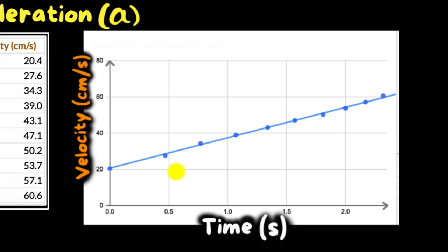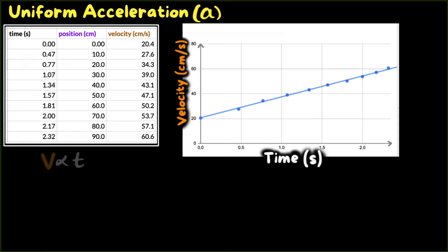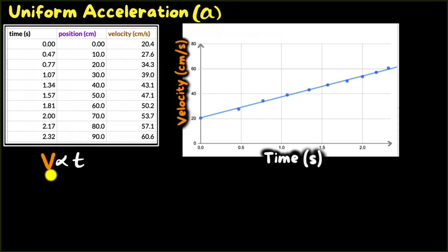You can see that this graph is pretty much a straight line. Whenever a graph is a straight line we say it's a linear graph, and the beauty of linear graphs is that the two quantities become proportional to each other. So in this case we can say that velocity is proportional to time. What does that mean? It means if time changes by some factor, velocity will also change by the same factor. Let's see that in the graph.